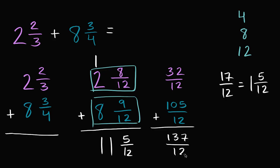And then if we wanted to rewrite this as a mixed number, we could say, twelve will go into a hundred thirty-seven eleven times. Eleven times twelve is one thirty-two, so you would have five left over. So it's eleven and five twelfths.